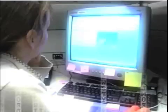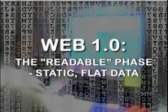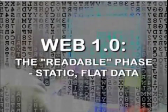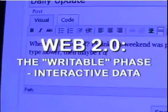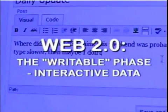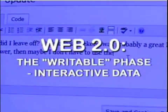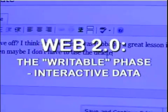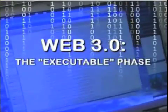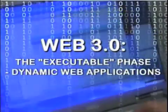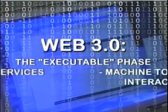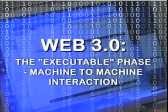One definition from the Wikipedia discussion tab calls Web 1.0 the readable phase of the World Wide Web — static, flat data. Web 2.0 is the writable phase — interactive data, social networking. Web 3.0 is the executable phase — dynamic applications, interactive services, machines talking to machines.